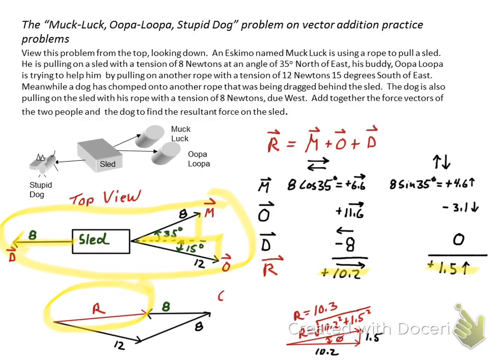My last thing I need to do is find this angle theta. In this case, I'm using the inverse tan function. I get 8.4 degrees. By default, I know that's counterclockwise from the positive x-axis. To be more specific, we say 8.4 degrees north of east. So these three acting together, this is the result of their efforts: a 10.3 Newton force, 8.4 degrees north of east.